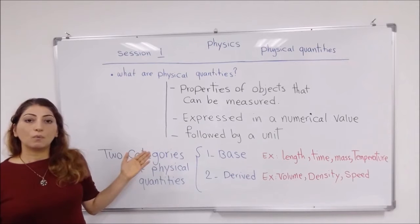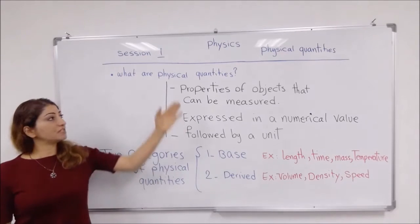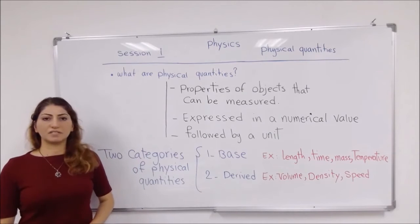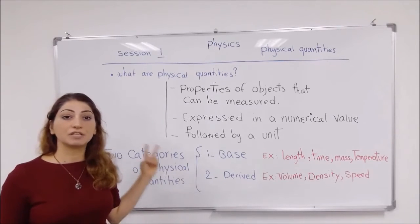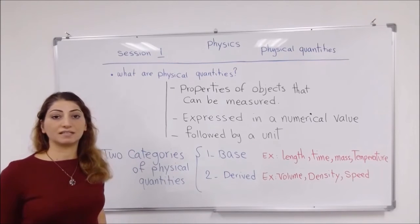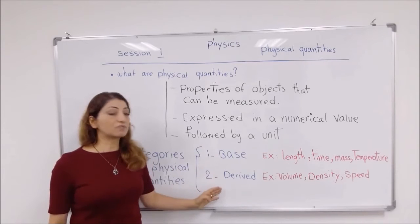Now, what are different categories of physical quantities? Is there any? Yes, there are two different categories of physical quantities. One of them is base, the other one is derived.